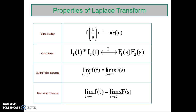The next important property is convolution. Convolution in the time domain results in the multiplication of two s domain sequences. Next is the initial value theorem: the initial value of the sequence f of t is given by the limit as t approaches 0 of f of t, which equals the limit as s approaches infinity of s into f of s. The next important property is the final value theorem: the limit as t approaches infinity of f of t equals the limit as s approaches 0 of s into f of s.